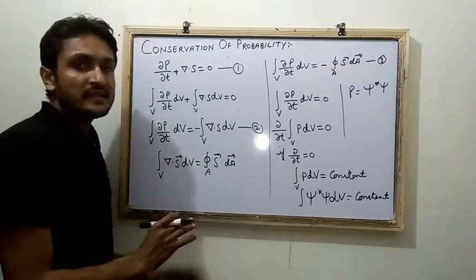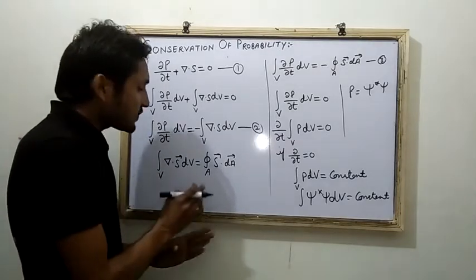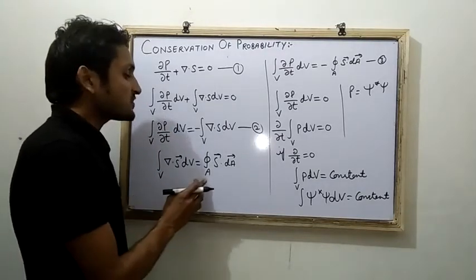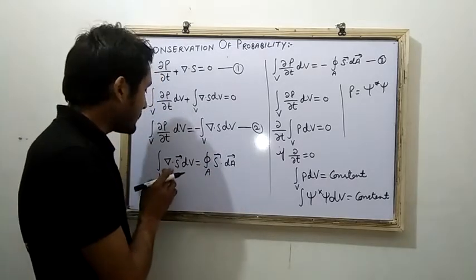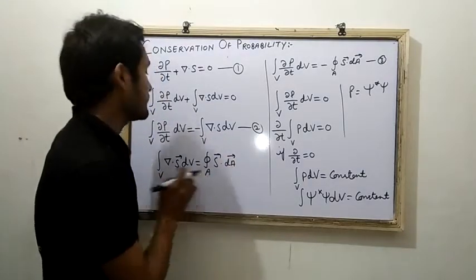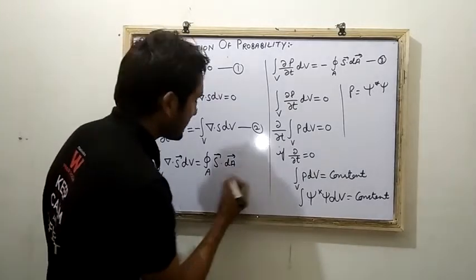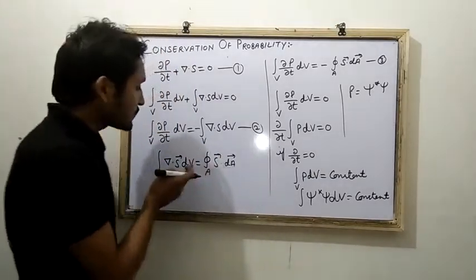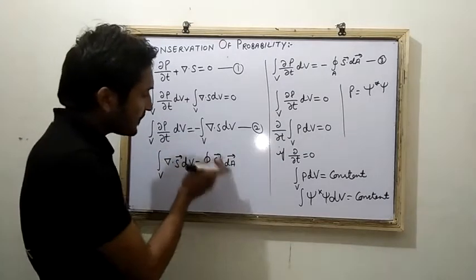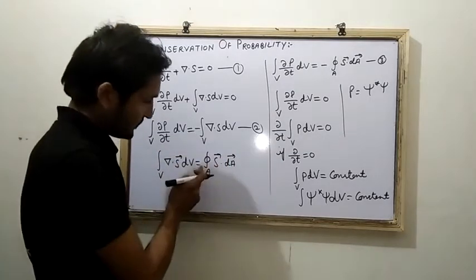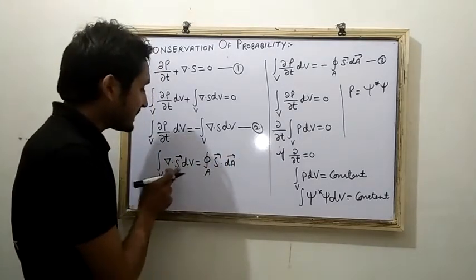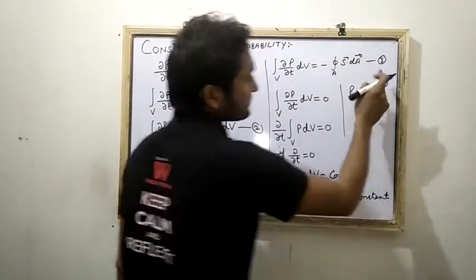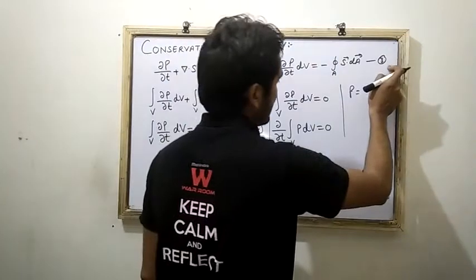This is the Gauss divergence theorem. The volume integral of del dot S dv equals the surface integral S dot dA. Applying this to equation two, we substitute the value of del dot S dv with the surface integral. This gives us equation three.